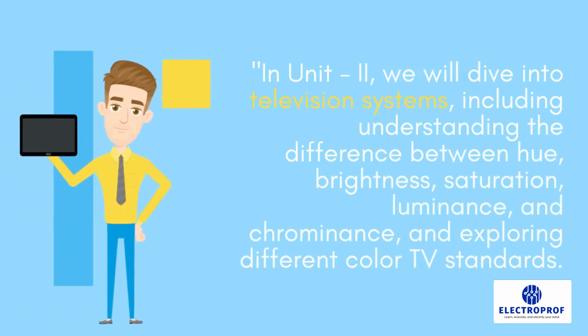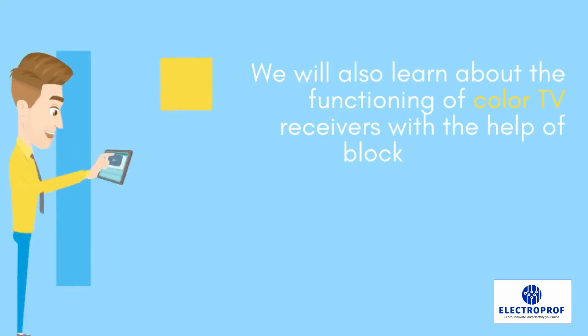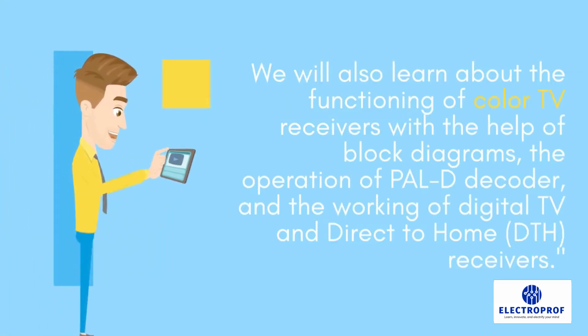In Unit 2, we will dive into television systems, including understanding the difference between hue, brightness, saturation, luminance, and chrominance, and exploring different color TV standards. We will also learn about the functioning of color TV receivers with the help of block diagrams, the operation of the PAL-D decoder, and the working of digital TV and direct-to-home receivers.